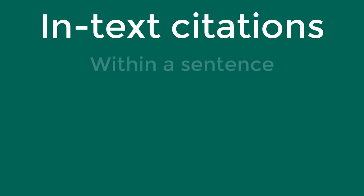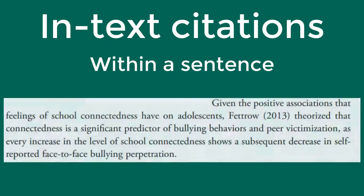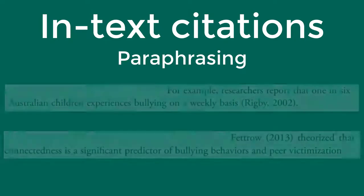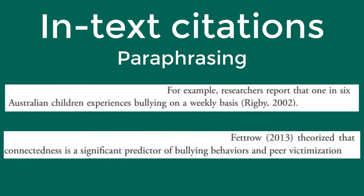The second way to write your in-text citation is to include it within your sentence instead of at the end. In this case, you would include the author's name within the sentence, directly followed by the year of publication in parentheses. The author-date template for in-text citations is used when you are paraphrasing.